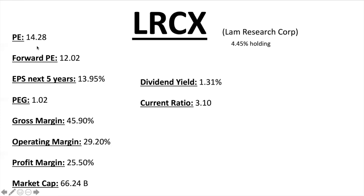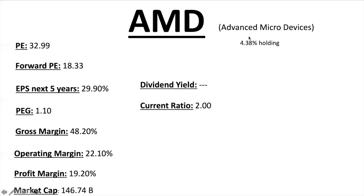Lam Research Corporation is another one of my favorites. PE ratio 14.28, Forward PE 12.02, EPS next five years 13.95% — giving it a nice low PEG ratio of 1.02. Margins are fantastic: gross margin just under 50%, profit margin 25.5% — over that 20-25% mark. Market cap $66.24 billion, dividend 1.31%, current ratio 3.10 — a lot more assets than liabilities. Great company with Lam.